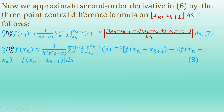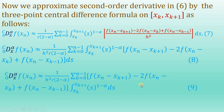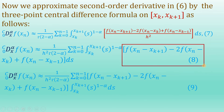Taking h squared common, it appears as 1 upon h squared times gamma of 2 minus alpha, giving equation number 8. In equation number 9, the expression containing the functional values is taken outside the integral since it does not contain the variable s, leaving us to integrate s to the power 1 minus alpha. Therefore equation 8 reduces to equation number 9.